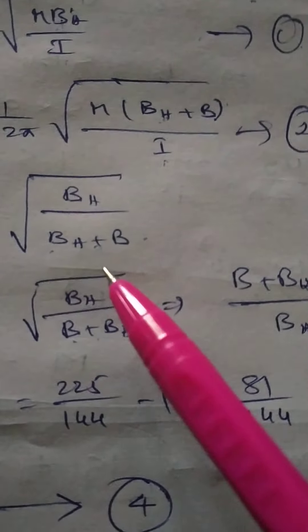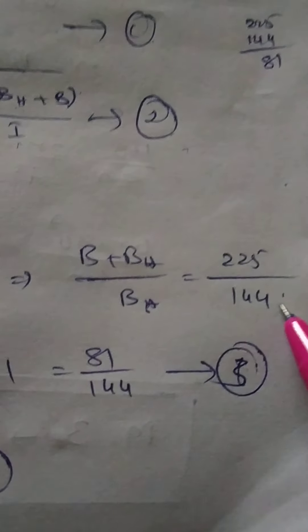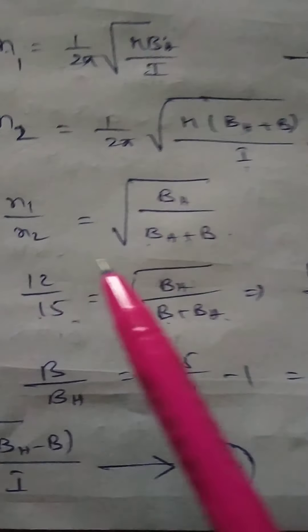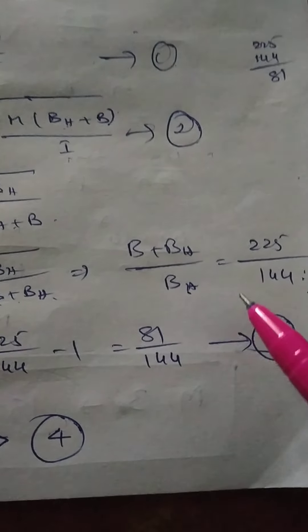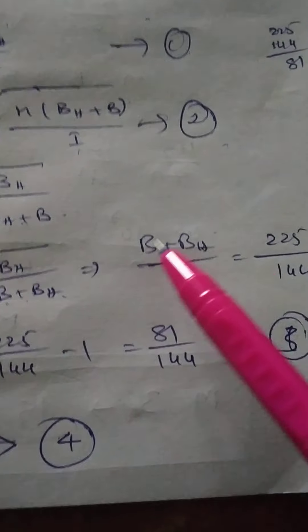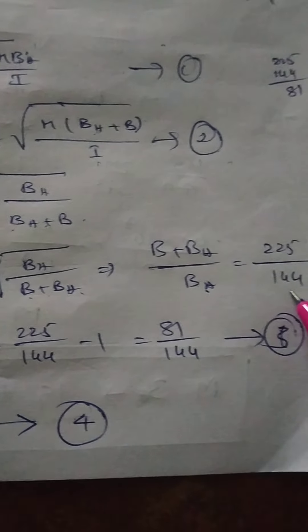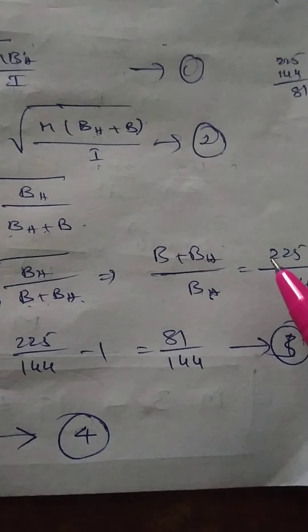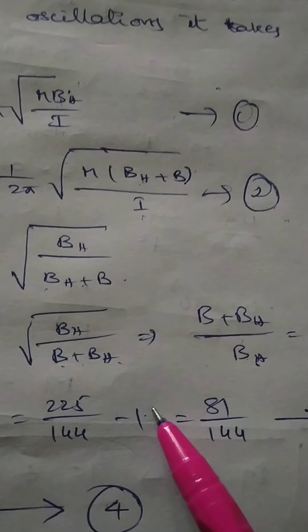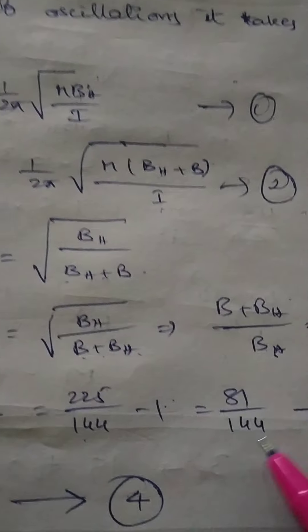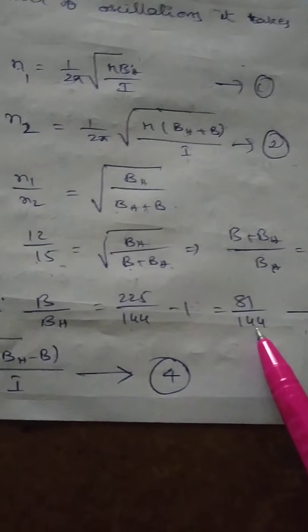Reversing and squaring both sides: (Bh + B)/Bh = 225/144 (since 15² = 225, 12² = 144). Therefore B/Bh + 1 = 225/144, which gives B/Bh = 225/144 − 1 = 81/144.